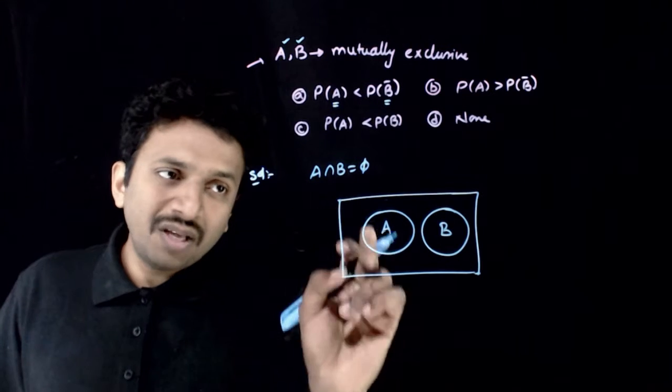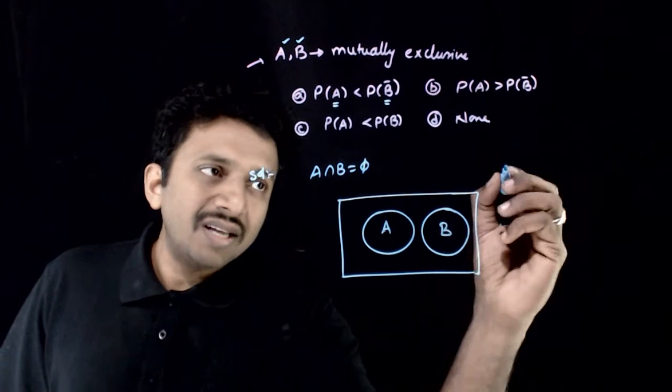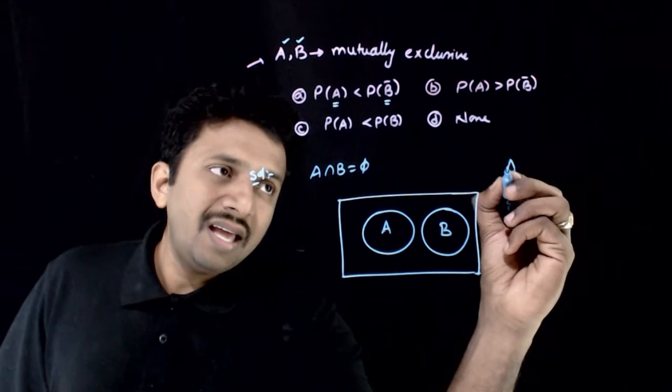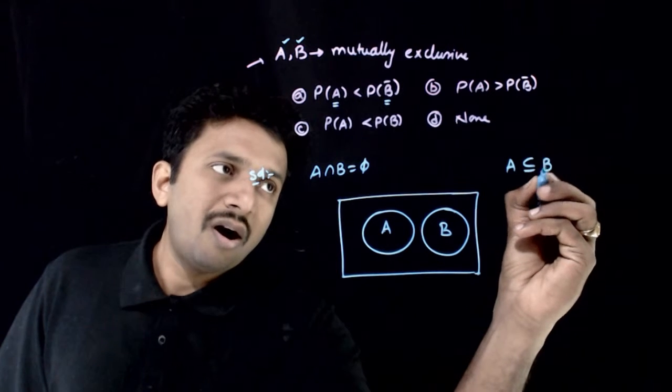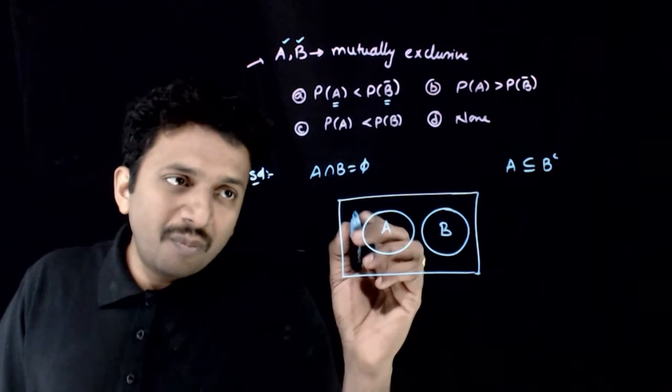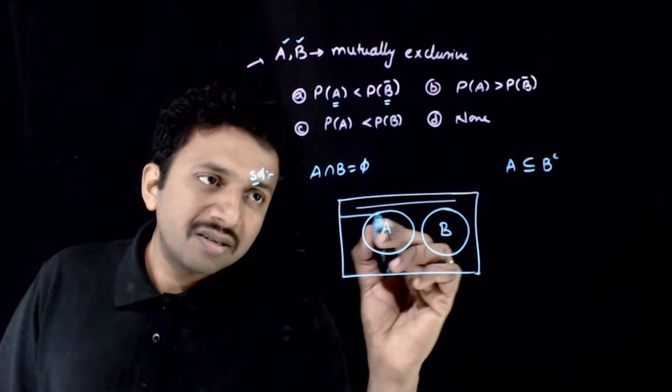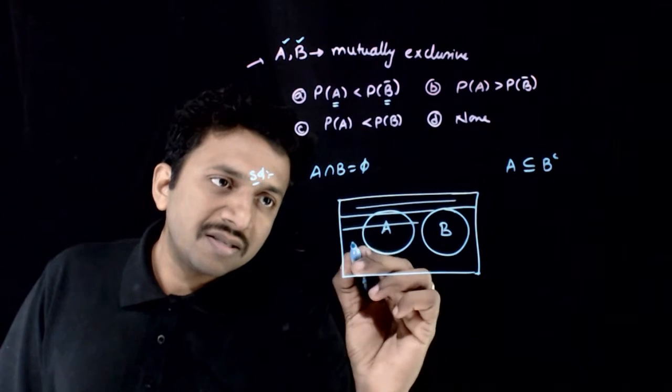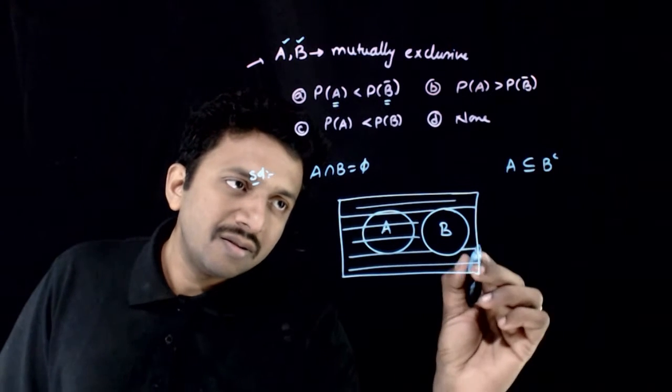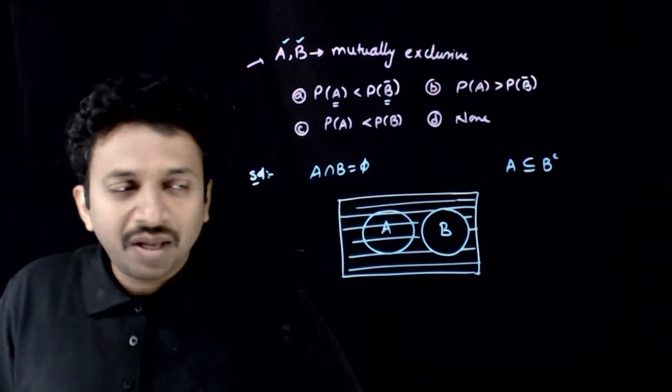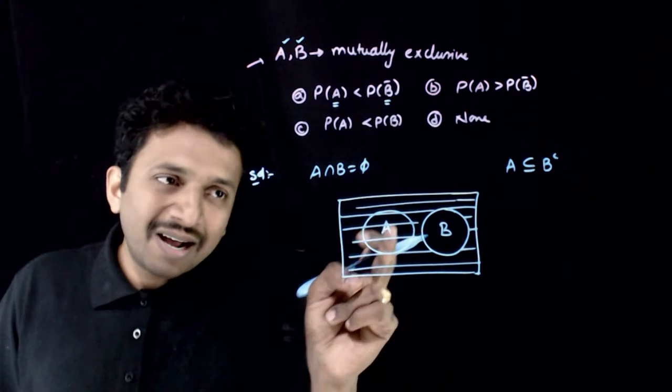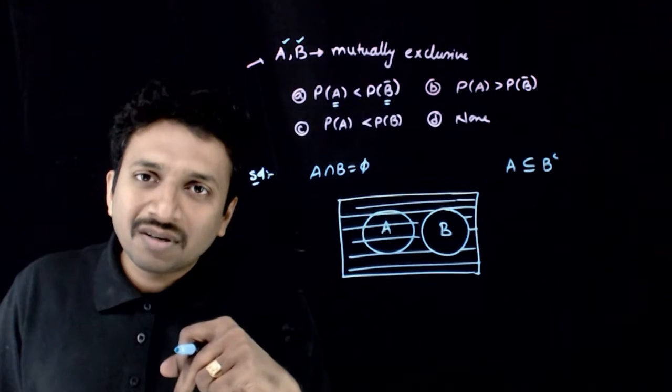If A intersection B equals phi, can you see that A is a subset of B complement? What is B complement? B complement is this—everything except B. Do you see that A completely lies inside B complement?